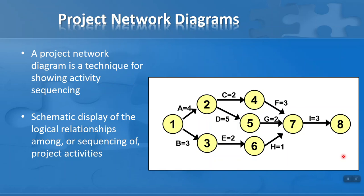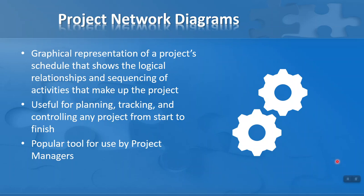So what is a project network diagram? I've drawn one here on the right-hand side and it looks a little complicated if you haven't seen one before, but bear with me as I'll build this up. A project network diagram is a technique for showing activity sequencing — you can see arrows all pointing to the right, indicating a sequence of activities represented by letters of the alphabet. It gives us a display of the logical relationships among the sequencing of project activities, which is very useful particularly when something's going wrong or we're looking for ways of improving things by reducing the number of activities.